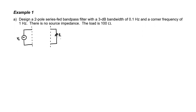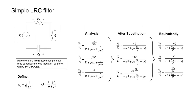It's going to be a series-fed bandpass filter with only two poles, so there aren't very many choices. I can either draw the inductor first followed by the capacitor, or I could have drawn the capacitor first — it wouldn't make any difference. Looking at the circuit, we see a source, an inductor, a capacitor, and a resistor all in series. This is a circuit we've analyzed before. When we analyzed it before, it was the resistor that came first, followed by the inductor and then the capacitor.